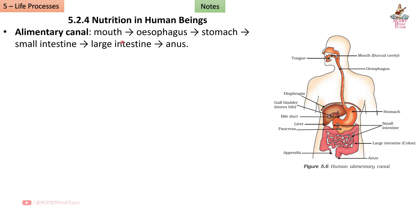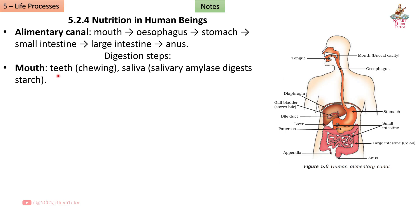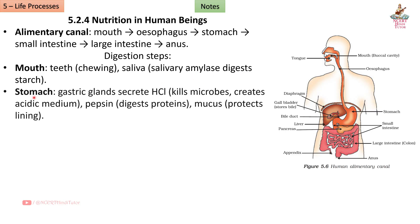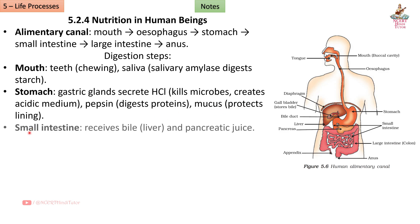Section 5.2.4: Nutrition in Human Beings. The complete pathway is called the alimentary canal. Digestion steps: hydrochloric acid kills microbes and creates an acidic medium; pepsin digests proteins; mucus protects the stomach lining. The small intestine receives bile from the liver and pancreatic juice.